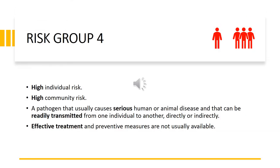A biological agent categorized under risk group four poses a high individual risk and a high community risk. This is a pathogen that usually causes serious human or animal disease and can be readily transmitted from one individual to another, directly or indirectly. Effective treatment and preventive measures are not usually available.